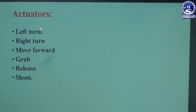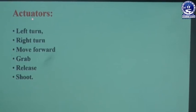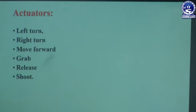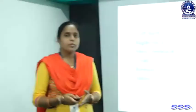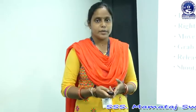Next are the actuators, which represent the actions the Wumpus World agent can take. The actuators are: left turn, right turn, move forward, grab, release, and shoot. These are the different actions taken by the Wumpus World agent according to the current percept and the knowledge base.